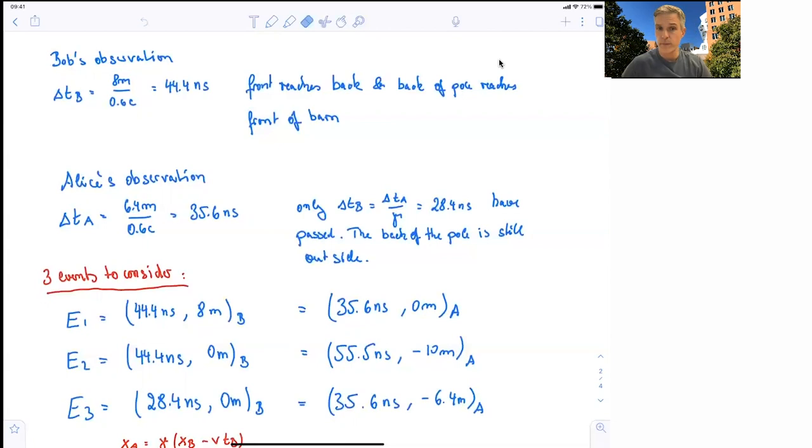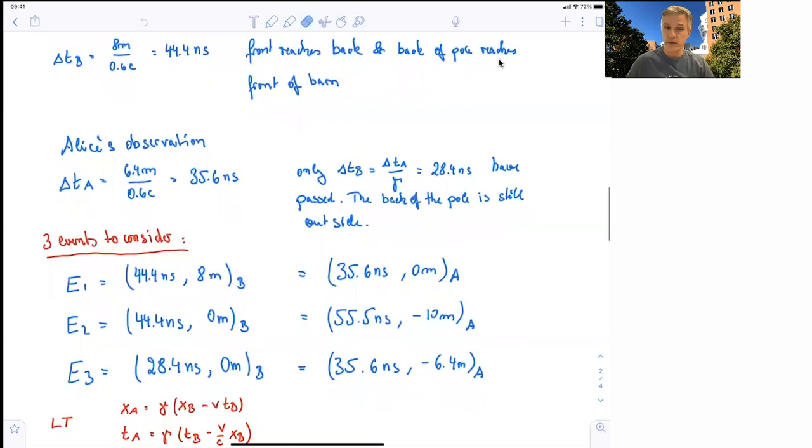The second event is then the other side of the barn. In Bob's reference frame, after 44.4 nanoseconds, 0 meters, he sees that 55 nanoseconds have passed. We use Lorentz transformation here. But the position is minus 10 meters. And the last point is 28.4 nanoseconds and 0 meters. That is the observation when Alice sees the end of the front of the barn, the front of the pole at the end of the barn. That translates into Alice's frame of 35.6 nanoseconds and minus 6.4 meters.